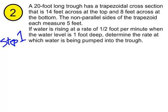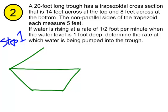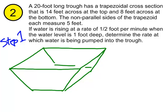A 20-foot long trough with a trapezoidal cross section — let's draw that cross section. Here's our trapezoid, and it's 20 feet long, so that's 20 feet into the page. This trough is 14 feet across at the top, 8 feet across at the bottom. The non-parallel sides are 5 feet each. So let's label: the two slanted sides are 5 and 5, the bottom is 8 feet.